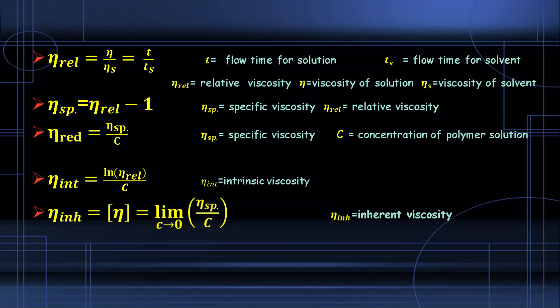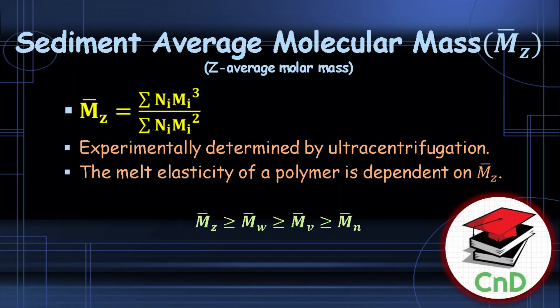The sediment average molecular mass is mathematically the summation of n_i·m_i³ divided by the summation of n_i·m_i², and this is determined by the ultracentrifugation process. We have now defined four average molecular masses: M_z, M_w, M_v, and M_n, and the following relation between them can be deduced by examining their formulas.